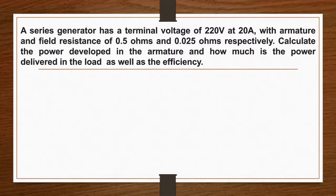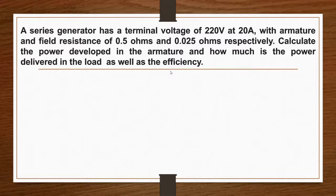A series generator has a terminal voltage of 220 volts at 20 amperes, with an armature and field resistance of 0.5 ohms and 0.025 ohms respectively. Calculate the power developed in the armature, how much is the power delivered to the load, as well as the efficiency.